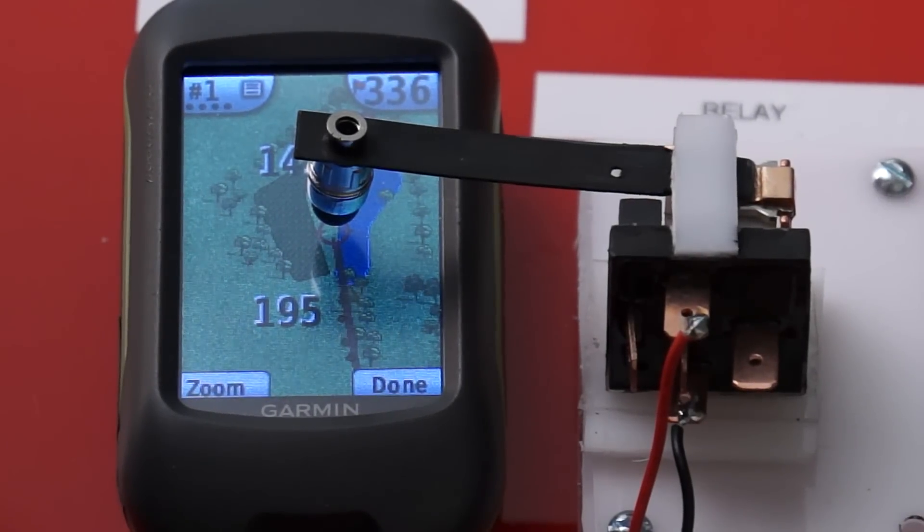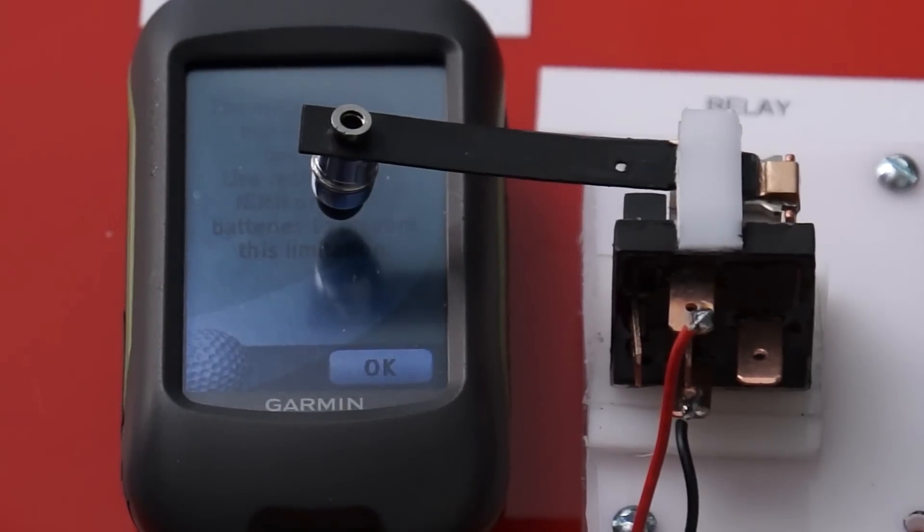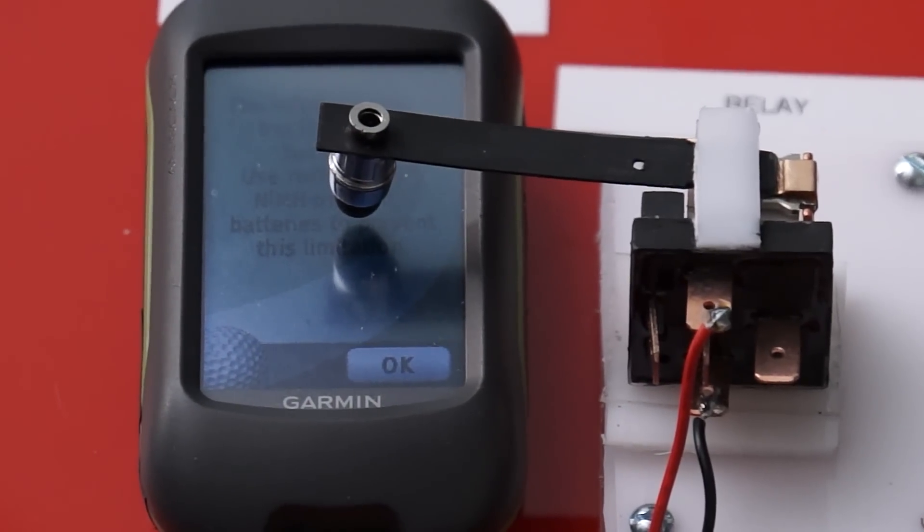The data shows that the GPS will stop functioning after one hour and 52 minutes and the screen dims to dark.